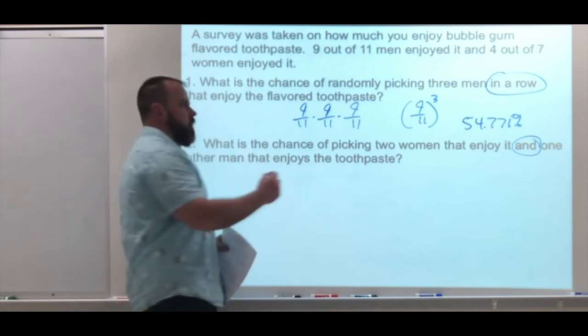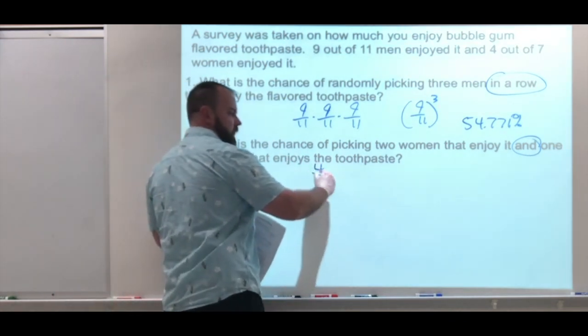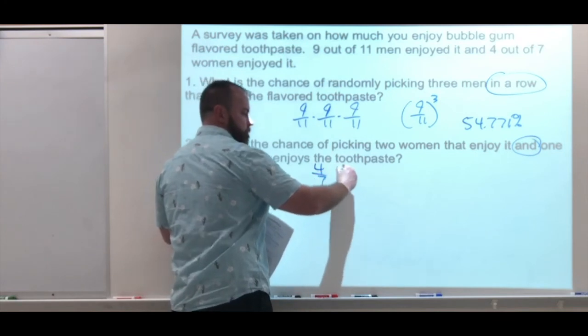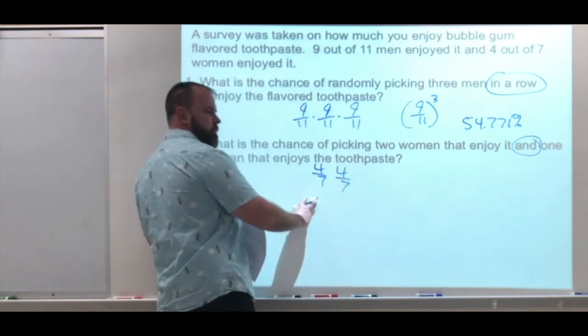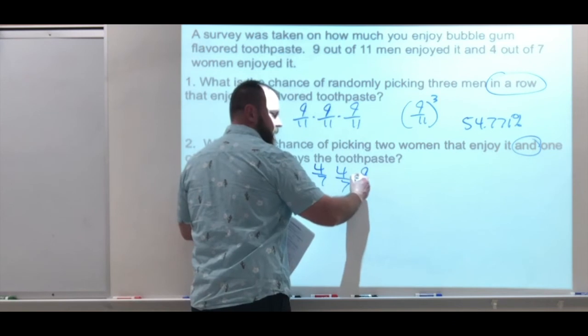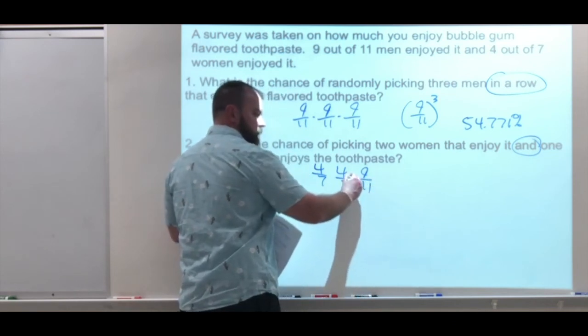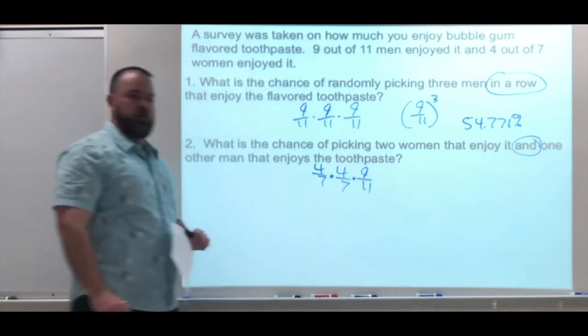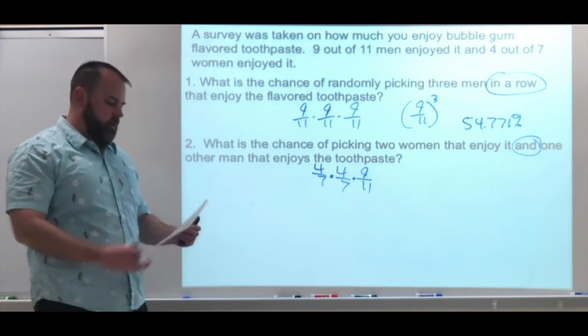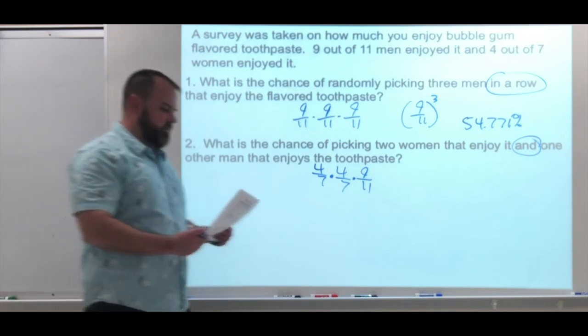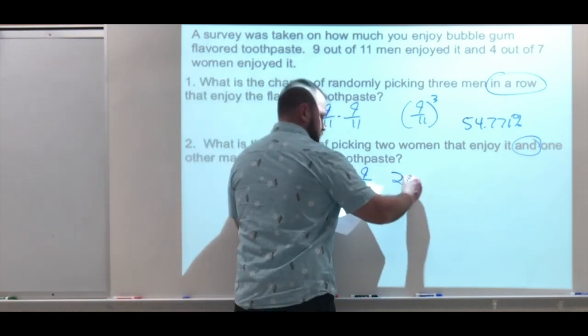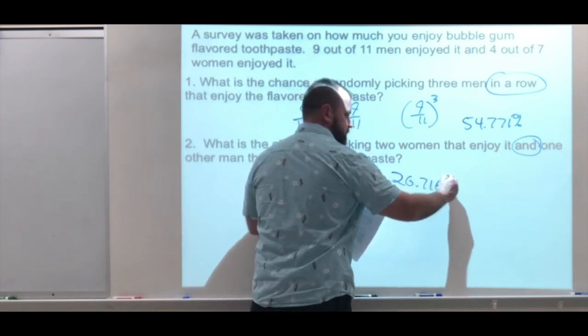So we're kind of mixing and matching here. For the women, we have 4 out of 7, 4 out of 7, there's our two women, and then 9 out of 11 for the men. So there's our probability for this one. So again, we have 26.716%.